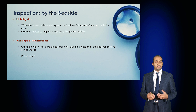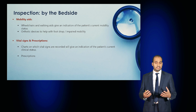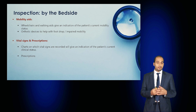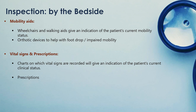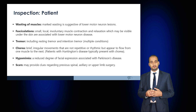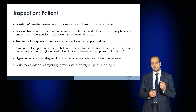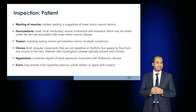Start by inspecting at the bedside. Look for any mobility aids — walking sticks and wheelchairs may give an indication of the patient's current mobility status, and orthotic devices may indicate peripheral neuropathy or foot drop. If there are any visual charts or prescriptions, examine them. On inspection, observe for any muscle wasting; marked wasting is seen with lower motor neuron conditions.